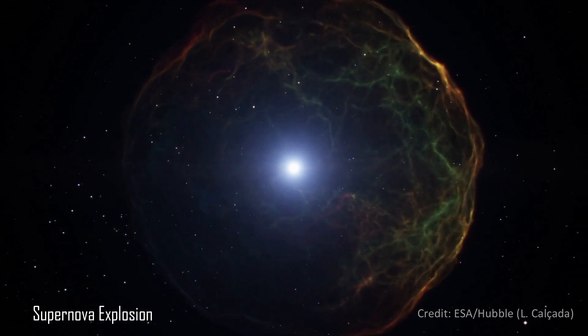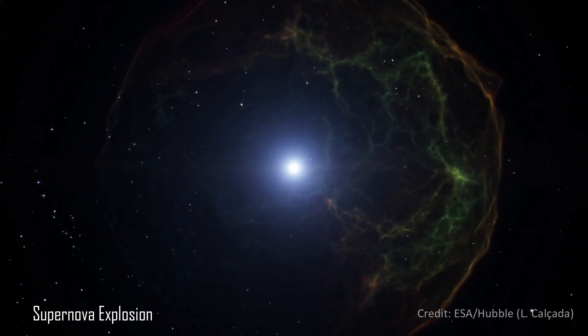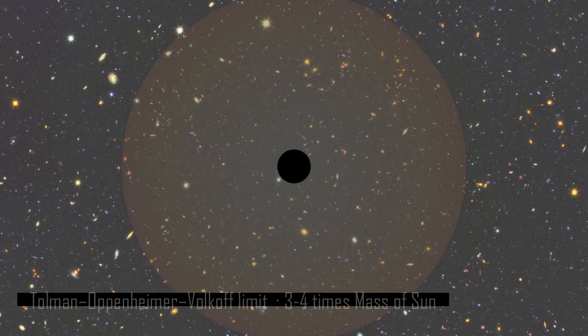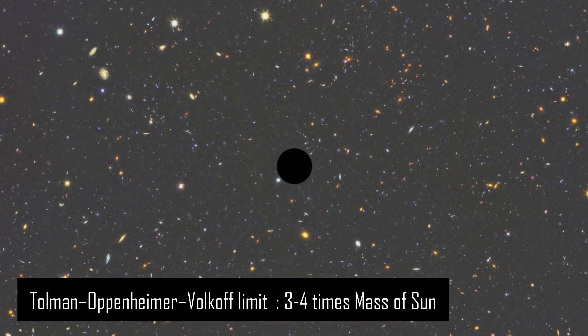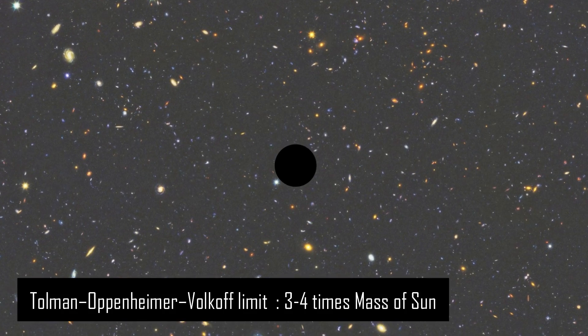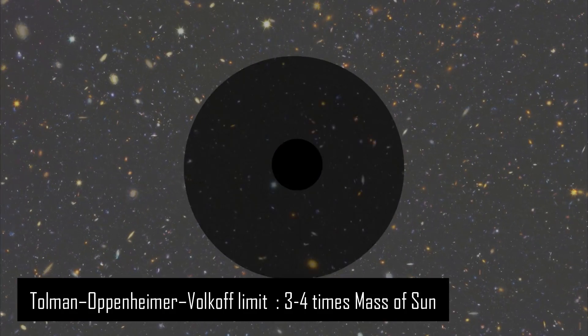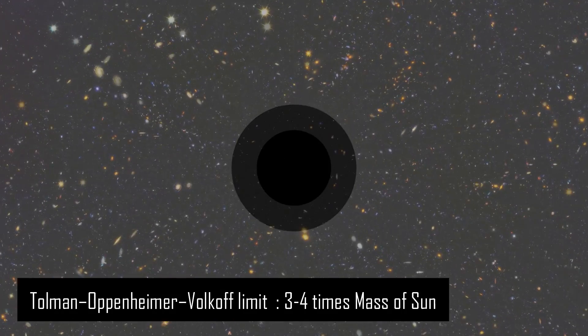If the mass of the remaining core exceeds about three to four times the mass of the Sun, also known as the Tolman-Oppenheimer-Volkoff limit, either because the star was very heavy or because a core collected additional mass later on, then nothing can stop the inevitable collapse of the star to form a black hole.